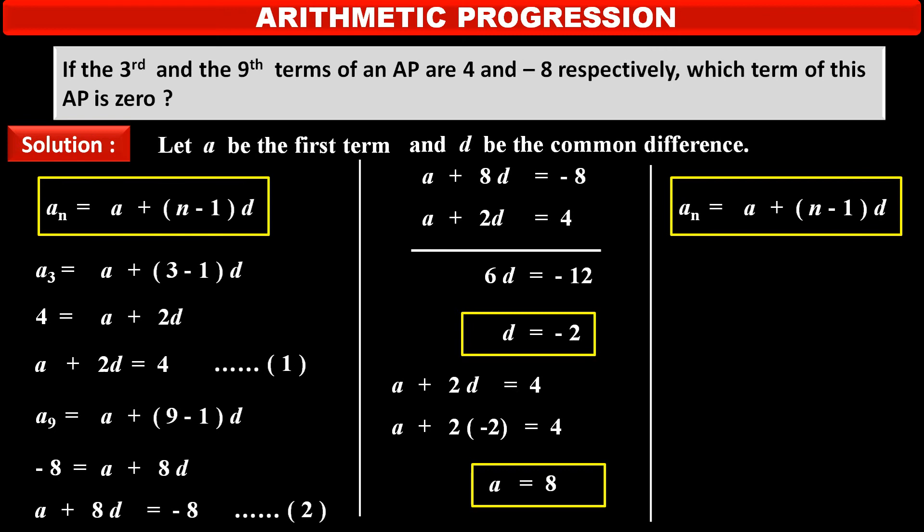In this formula of Nth term, now we have to substitute value of Aₙ as 0. So, Nth term 0 is equal to value of first term A that is 8 plus in bracket N minus 1 bracket complete into value of D minus 2. Therefore, 0 is equal to 8 minus 2N plus 2.